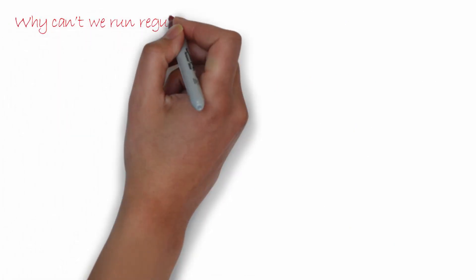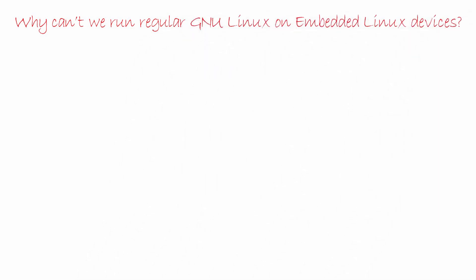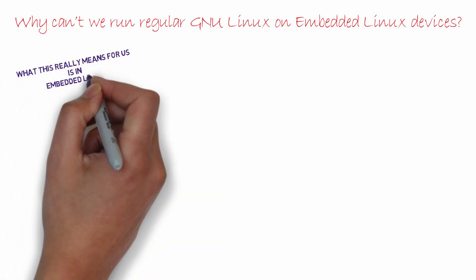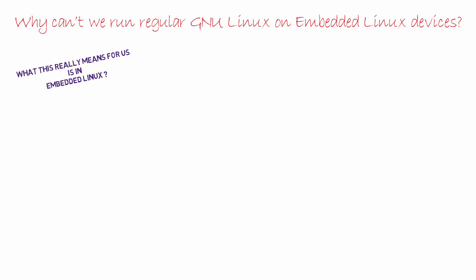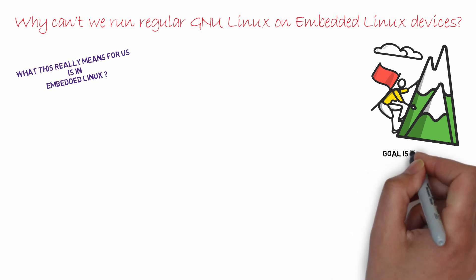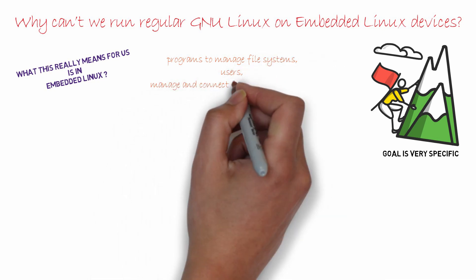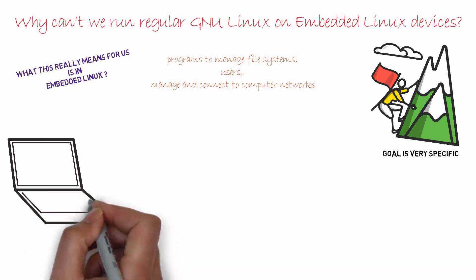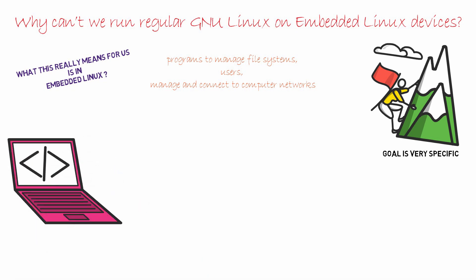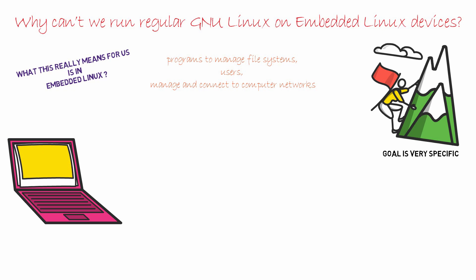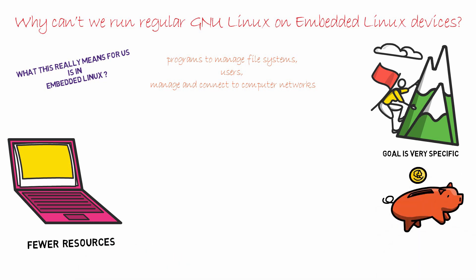Why can't we run regular GNU Linux on embedded Linux devices? You might have noticed the words 'just the necessary GNU utilities' and 'some of the GNU utilities.' In Embedded Linux, we only use what we need, as our goal is very specific. GNU utilities include programs to manage the file system, users, and connect to computer networks, etc. If our particular product doesn't need some of the components typically used on a general purpose computer, we simply remove them so our final product needs fewer resources to run, and thus we can make economically cheaper products.